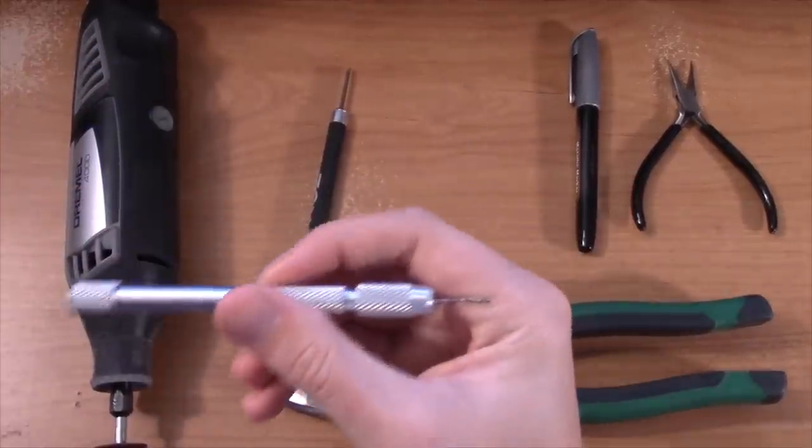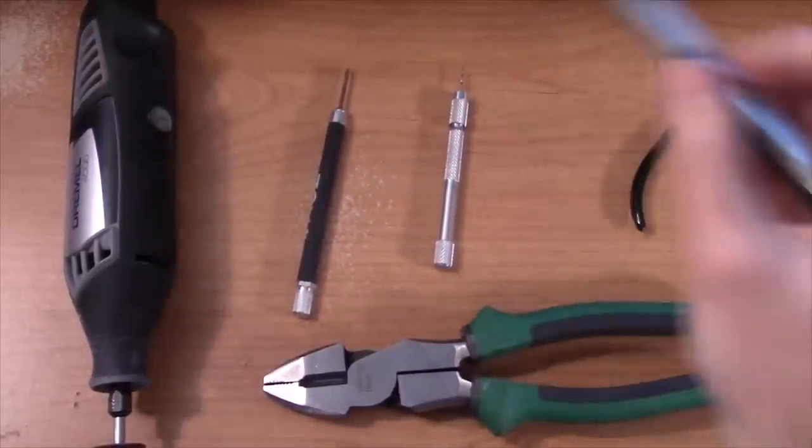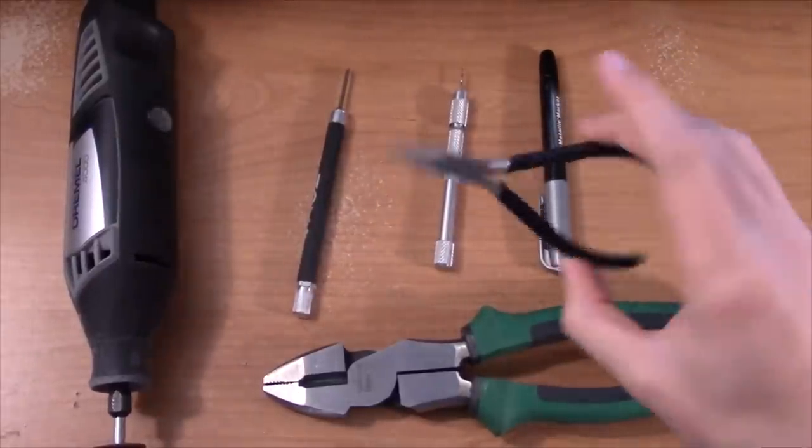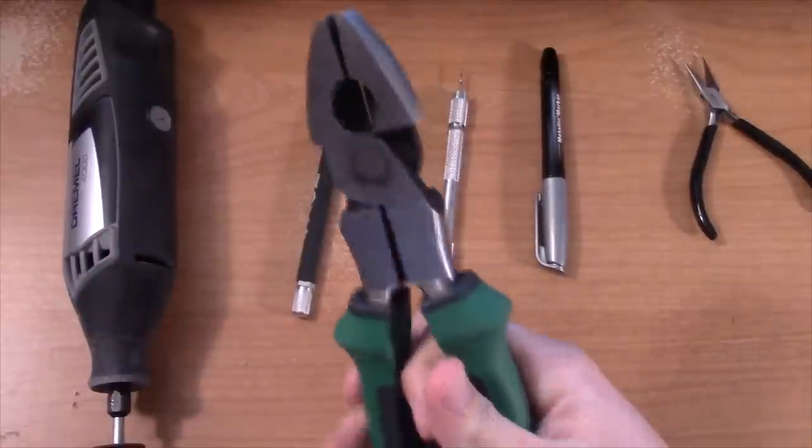To make the holes in our bow, we'll need a hobby drill with a 1mm drill bit. A metallic marker or pencil will help us cut our carbon fiber rod to the desired length. A pair of needle nose pliers will help us close our crimp tubes when we string our bow. Lastly, we'll need some wire cutters to trim the excess string.